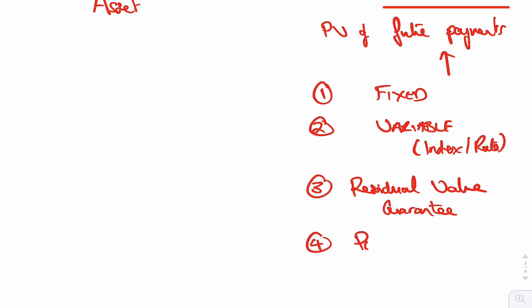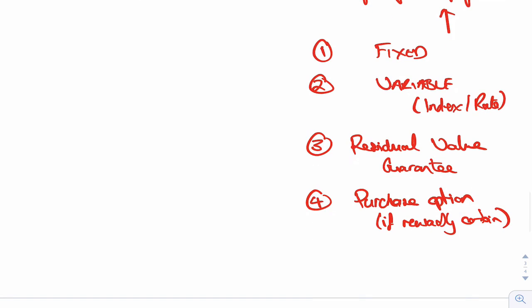Also, there might be a purchase option, meaning that you've got a five-year lease, but after three years, you can buy it. Now, the amount you can buy it for, do you include that as a future lease payment? Yes, if reasonably certain that you're going to take it. If you're reasonably certain that you're going to buy it, well that's a future lease payment then.